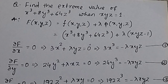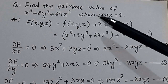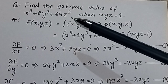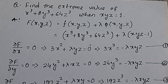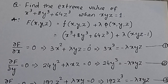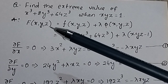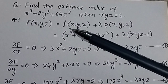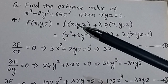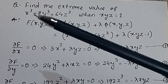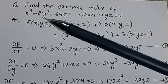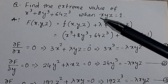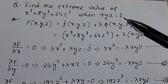Using the Lagrange multiplier technique, find the extreme value of the function x³ + 8y³ + 64z³ when xyz = 1. The objective function is x³ + 8y³ + 64z³, and the constraint condition is xyz = 1.